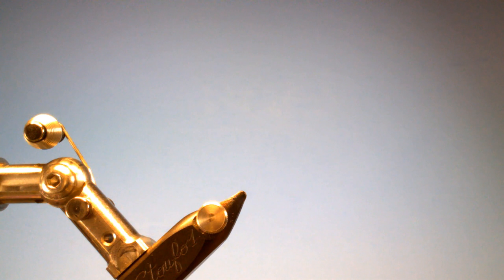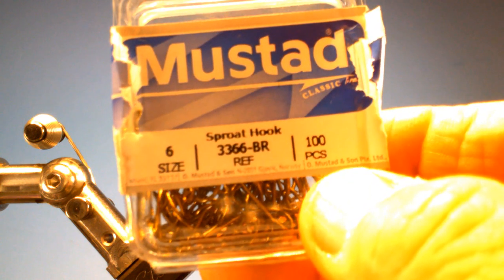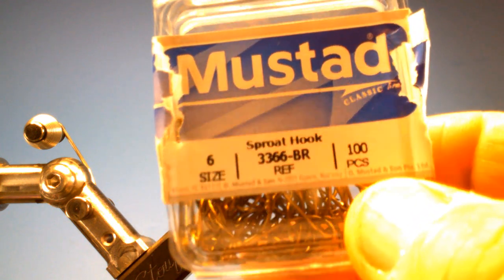The hook I'm going to use is a Mustad 3366, a Sprout hook in the size 6. And I'll de-barb that.